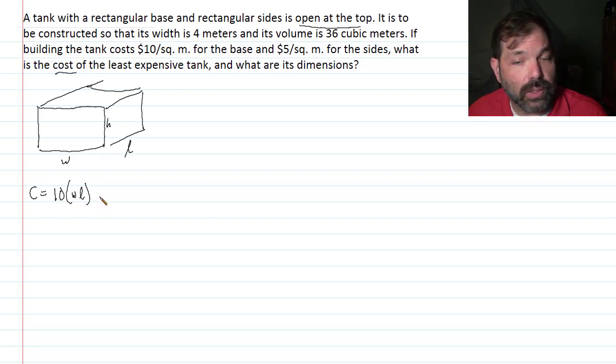Now the sides have a different cost. The sides are $5 per square meter. Let's think about the front and the back. The front and the back have the same dimensions, the width times the height. So I'd have $5, and then I'd have two, one for the front, one for the back. And the area of those is W times H. Similarly, for the left-hand side and the right-hand side, they're $5 per square meter times 2 times L times H.